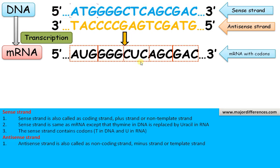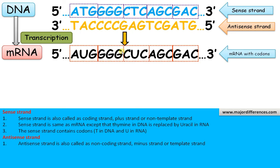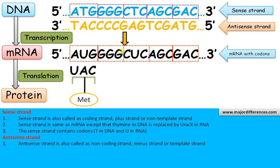The sense strand contains codons. You can see the codes of the sense strand and the mRNA are the same. Here in the sense strand it is ATG — that is a codon — and in the mRNA it is AUG, which codes for methionine. Similarly for glycine. So the sense strand and the mRNA both have the codons that code for amino acids.